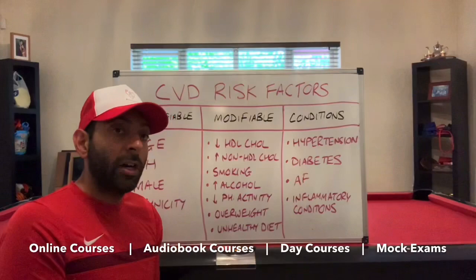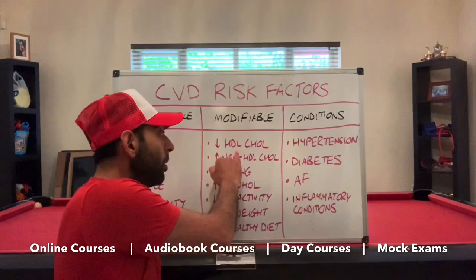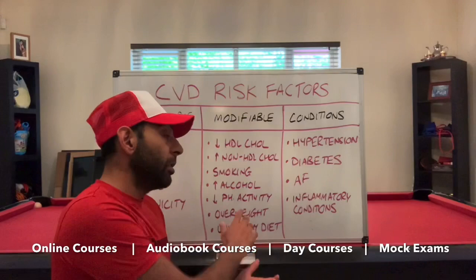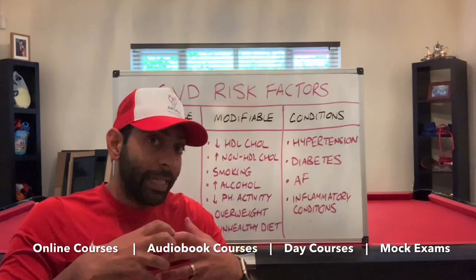Then you have your modifiable risk factors. These include things like low HDL cholesterol or high non-HDL cholesterol — look at the combination when you get lipid blood test results. Smoking, of course, high levels of alcohol, reduced physical activity, poor diet, and being overweight or obese. These are all risk factors for cardiovascular disease.